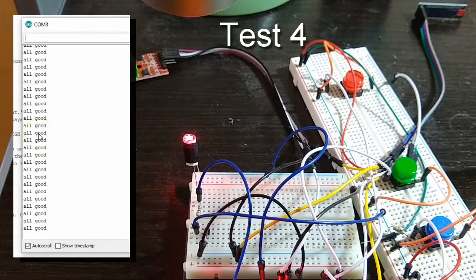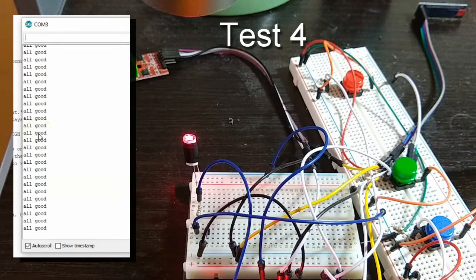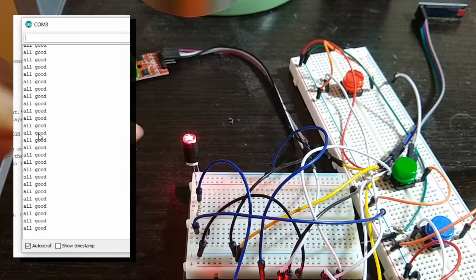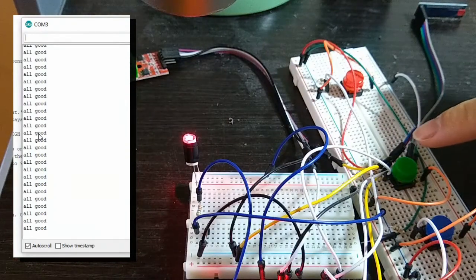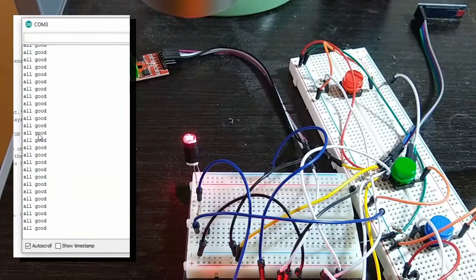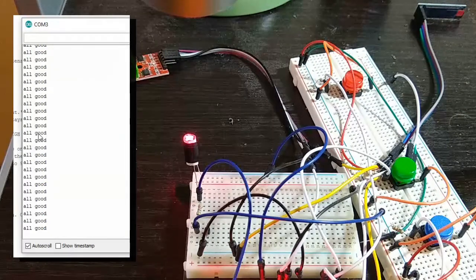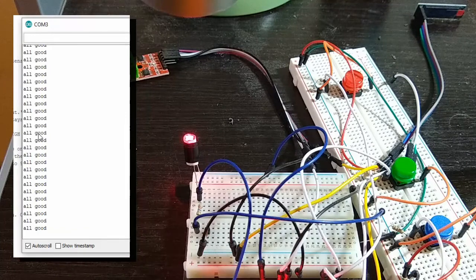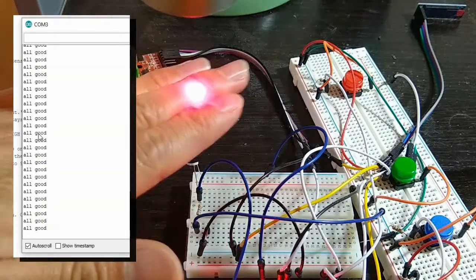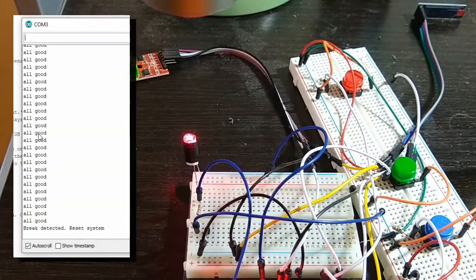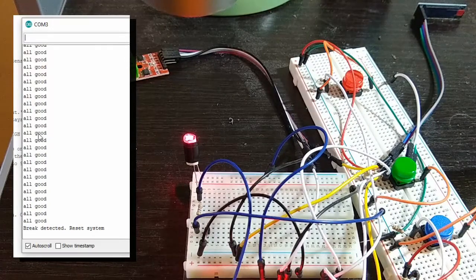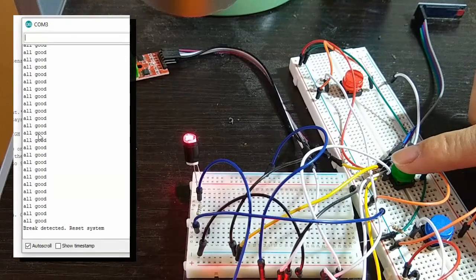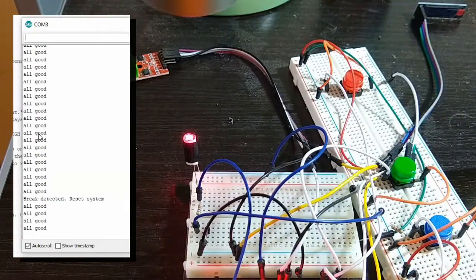All right, this is test number four. As we see, we have the laser shining down directly on the photoresistor. And we have the green reset button over here. So if we look at the serial monitor, it stays all good. However, once we break the laser beam, it will stop the serial monitor. As you can see in the serial monitor, it says brake detected, reset the system. So we're going to press the green button to reset. And it resumes again.